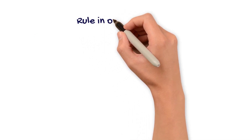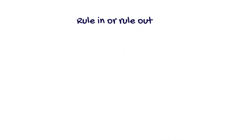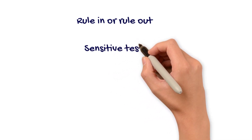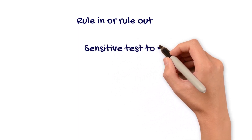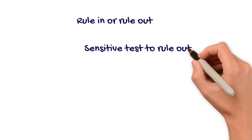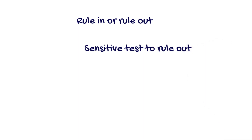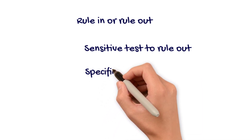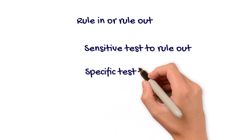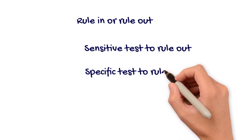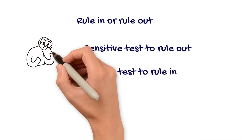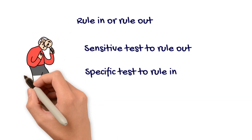A sensitive test will rarely miss patients with the condition. If a sensitive test shows a negative result, it helps rule out the condition. A specific test will rarely misclassify people without the condition as having the condition. If a specific test shows a positive result, it helps rule in the condition.